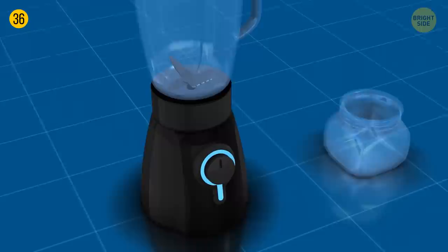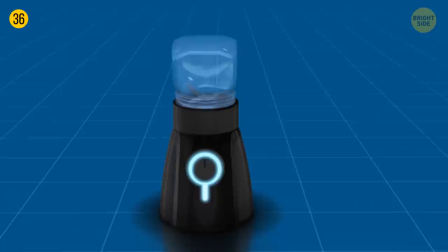You can use a mason jar directly onto the blender with a screw on top and make any shake you want without having to wash the blender jar. The only rule is to not put your device on max.